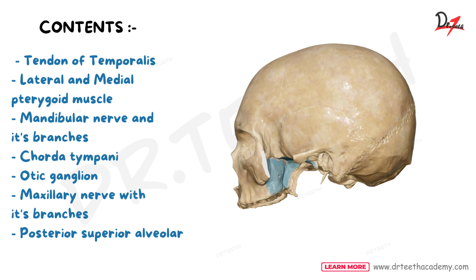The contents of the infratemporal fossa include the tendon of temporalis muscle, lateral and medial pterygoid muscles, mandibular nerve and its branches, chorda tympani, otic ganglion, maxillary nerve with its branches, and the posterior superior alveolar artery.